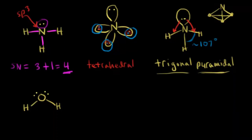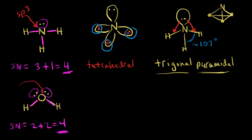Let's do one more example — water. First we calculate the steric number: it equals the number of sigma bonds — one, two, so two sigma bonds — plus the number of lone pairs of electrons. There's one lone pair, and another lone pair, so two plus two equals four. We need four hybridized orbitals. As in the previous two examples, when you need four hybridized orbitals, that's an sp3 hybridization situation. So this oxygen is sp3 hybridized.